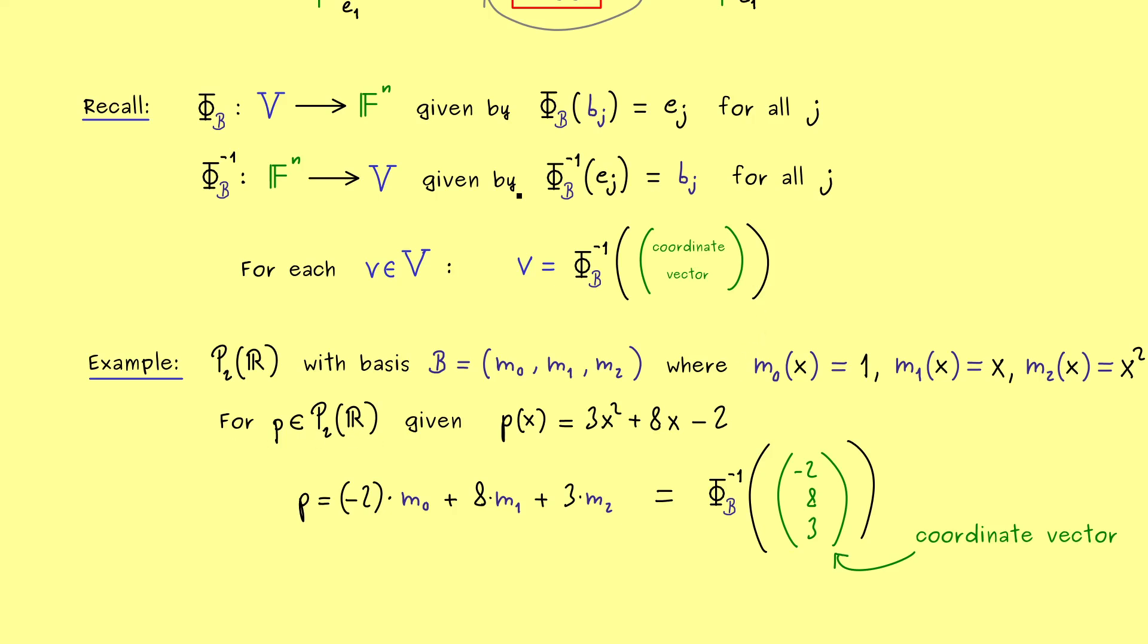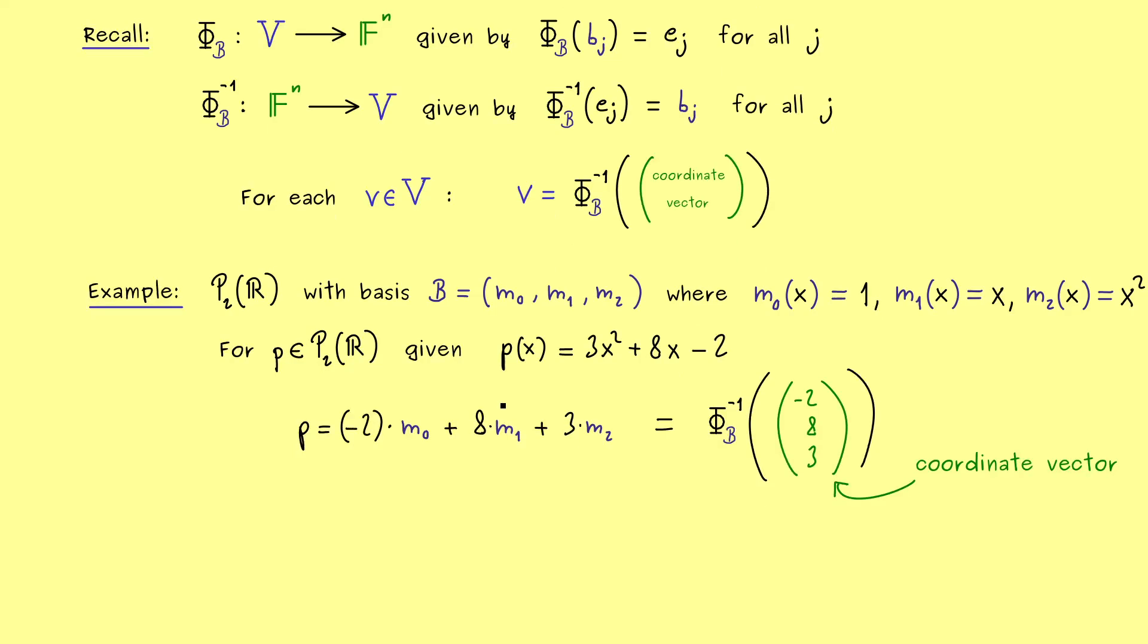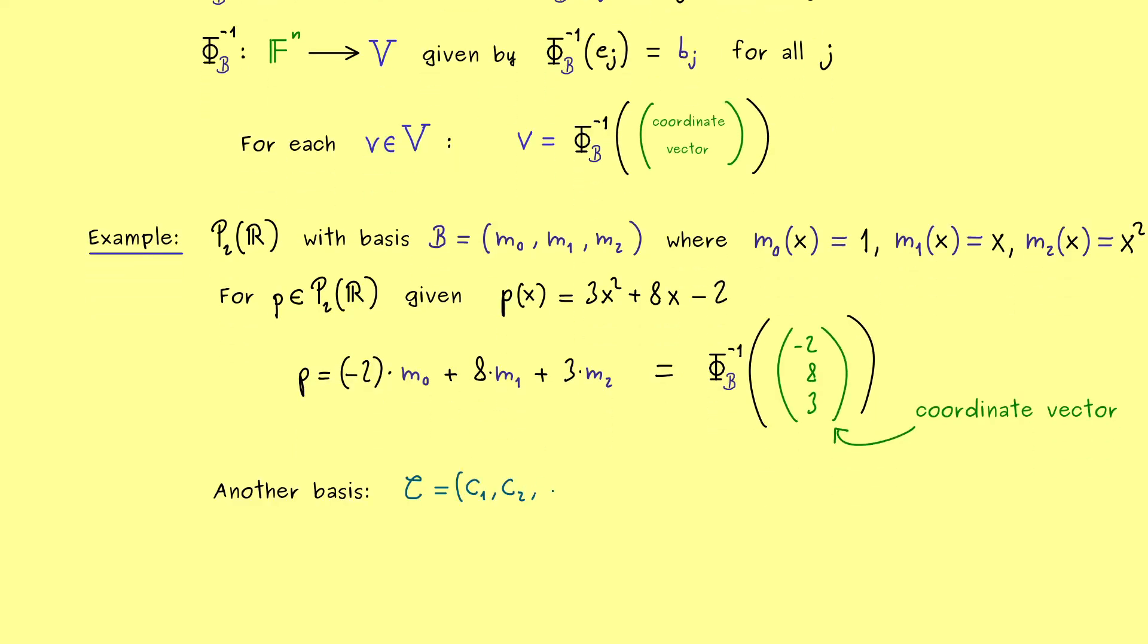Okay now for this example let's write down another basis C. So there we know also this basis needs 3 elements. And maybe let's say that the first 2 are exactly the same. So c1 is m0 and c2 is m1.